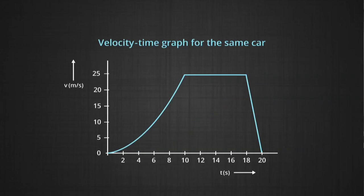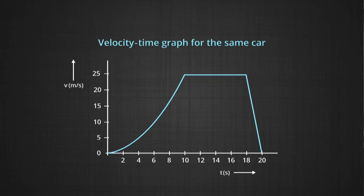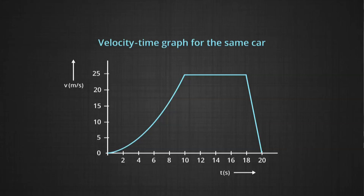The corresponding velocity-time graph for the same car shows velocity in meters per second on the y-axis and time in seconds on the x-axis. From 0 to 4 seconds, velocity has hardly changed. But by 10 seconds it shot up to almost 25 meters per second. The car then moved with constant speed, shown as a straight line on the position-time graph and a horizontal line on the velocity-time graph. Since motion is in one dimension, constant velocity and constant speed are equivalent here.